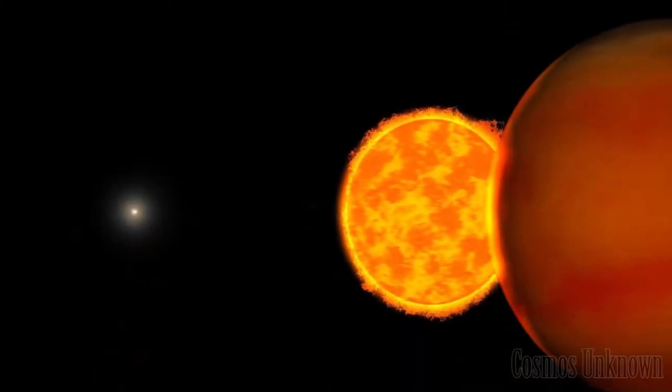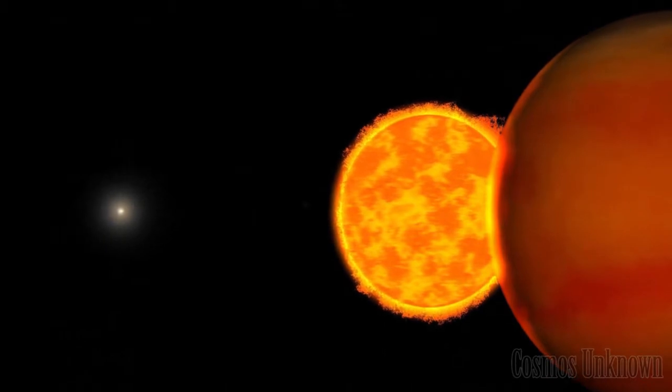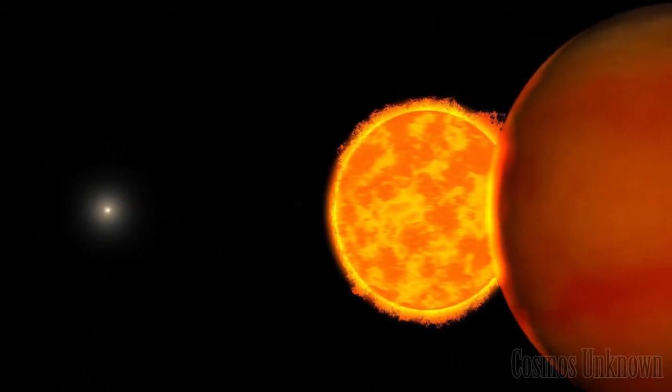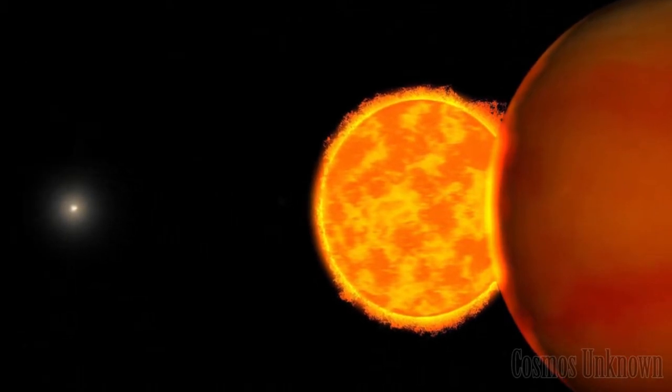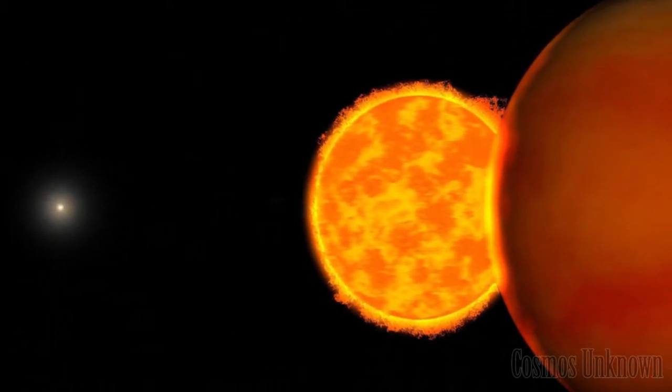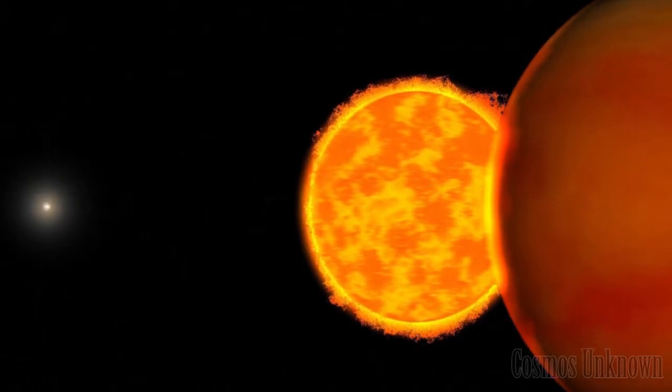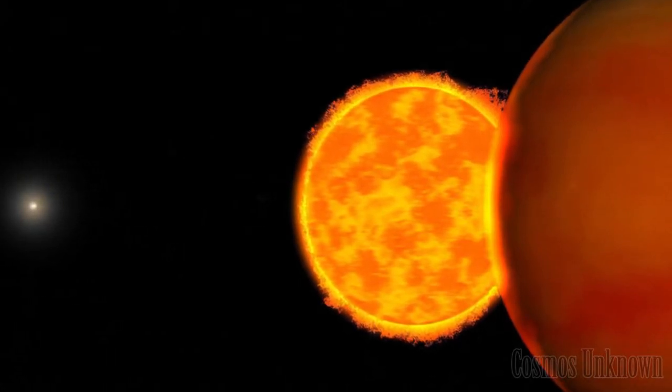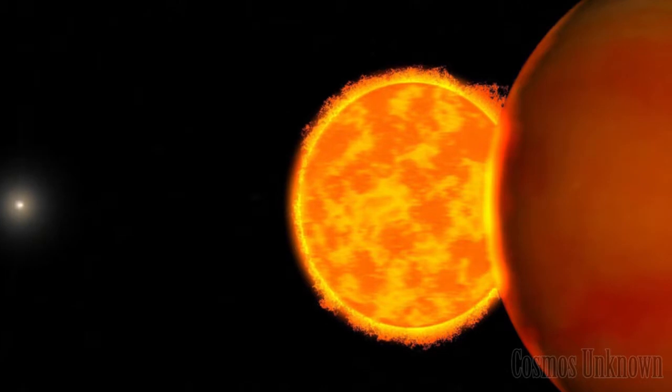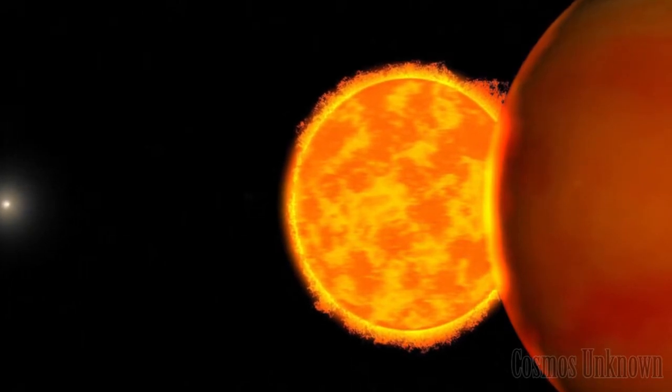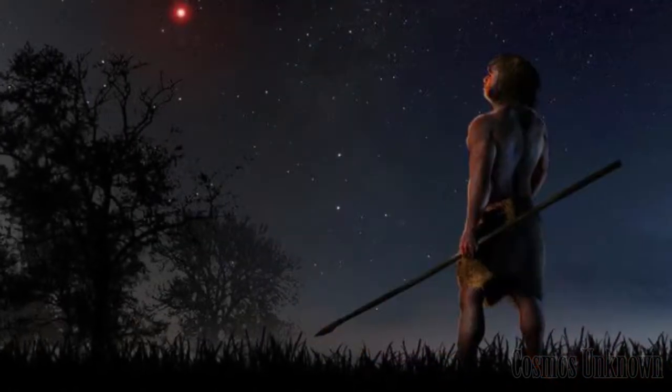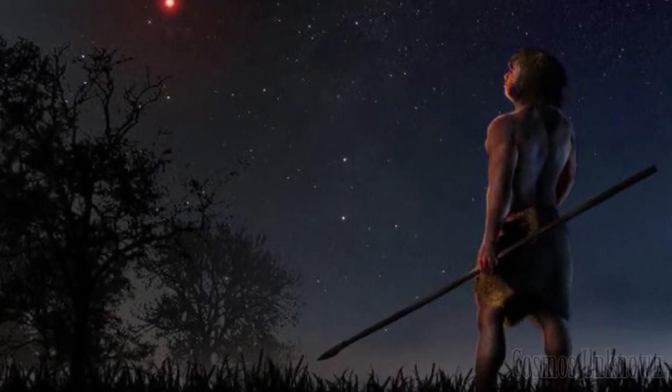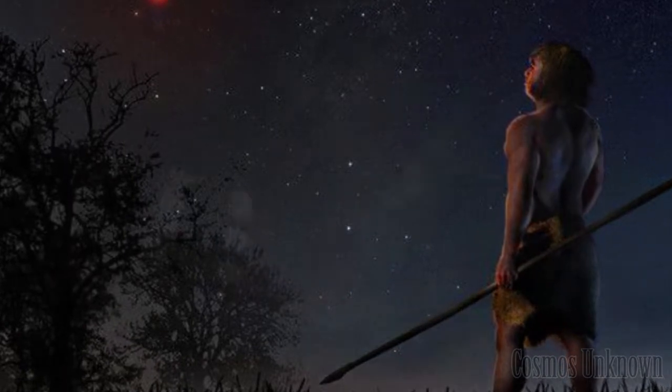Scholz's star, also known as WISE J072003.20-084651.2, is actually a binary system formed by a small red dwarf, with about 9% of the mass of the Sun, around which a much less bright and smaller brown dwarf orbits, in the southern constellation Monoceros, approximately 20 light years away. It is likely that our ancestors saw its faint reddish light in the nights of prehistory.